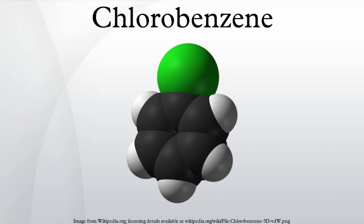Chlorobenzene is nitrated on a large scale to give a mixture of 2-nitrochlorobenzene and 4-nitrochlorobenzene, which are separated. These mononitrochlorobenzenes are converted to related 2-nitrophenol, 2-nitroanisole, 2-nitrophenyl disulfide, and 2-nitroaniline by nucleophilic displacement of the chloride,